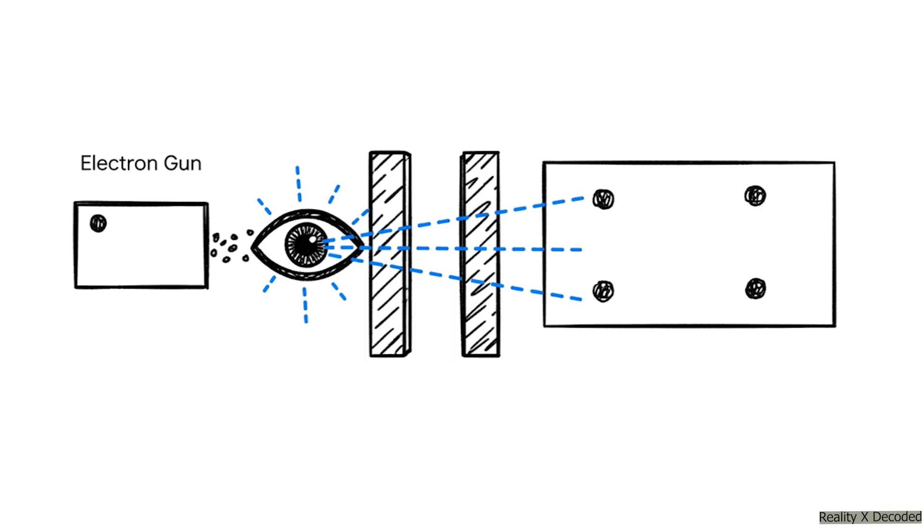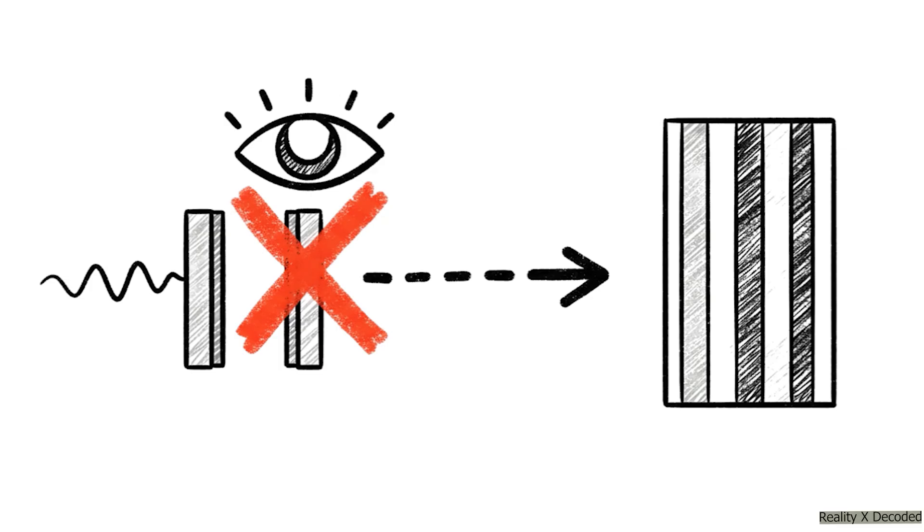So the idea was really straightforward. Let's just put a tiny little detector right by the slits, a device that can go beep when an electron goes through the left slit or boop when it goes through the right. We're just going to watch, a simple act of observation. First, let's just run it as a control.